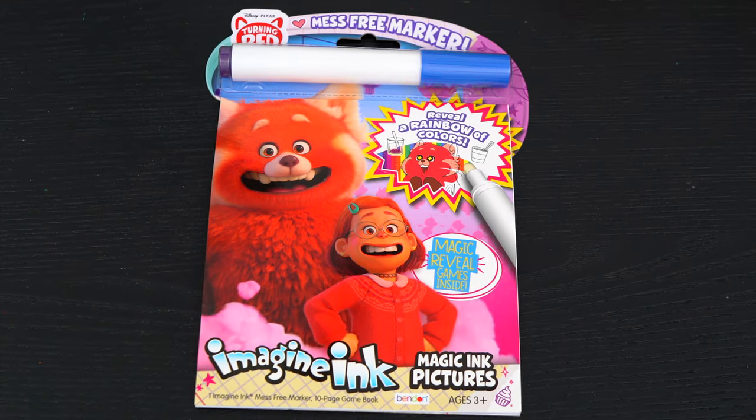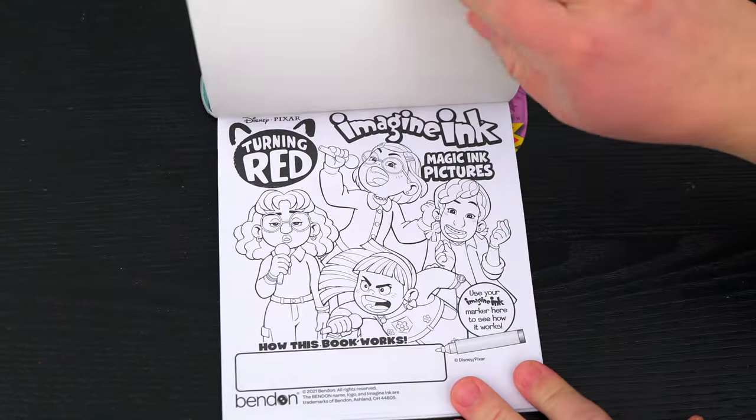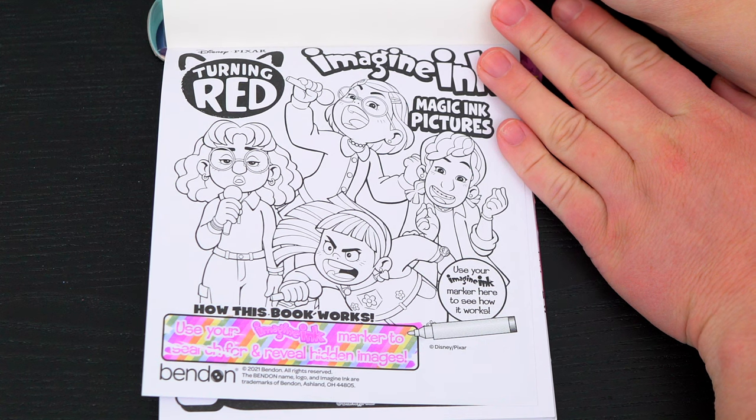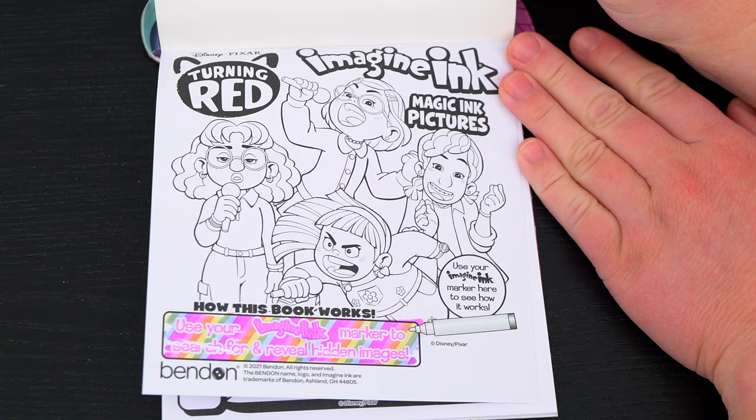All right, so first, let's take out the Imagine Ink marker. It says, use your Imagine Ink marker to search for and reveal hidden images. Let's try it out on this picture up here.